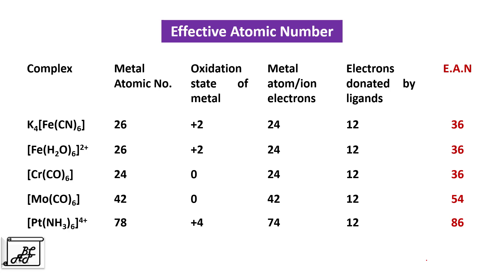There is an important application of the effective atomic number rule in catalysis. If a coordination compound has an effective atomic number of 34, it needs two electrons to reach the EAN of the nearest noble gas — it can accept two electrons in a reaction and act as an oxidizing agent. If the effective atomic number is 38, it can donate two electrons and act as a reducing agent. We will study this application in detail in another video.